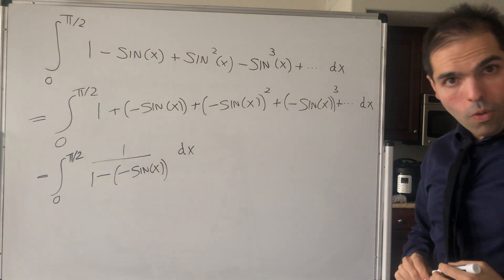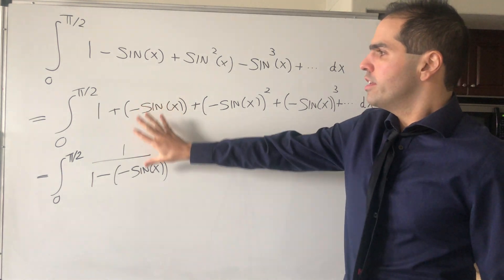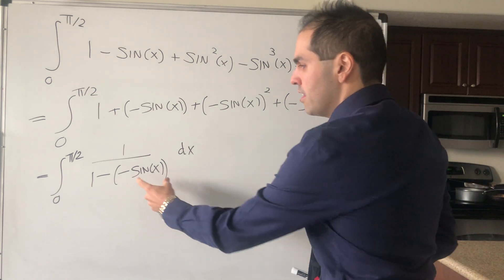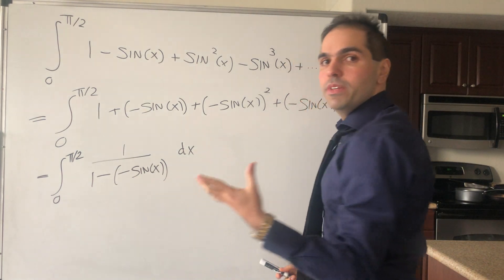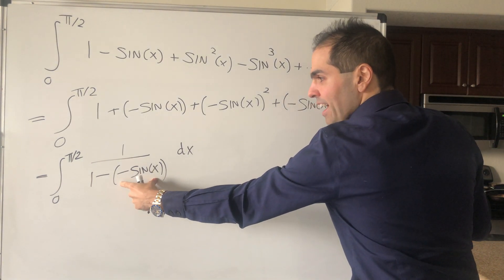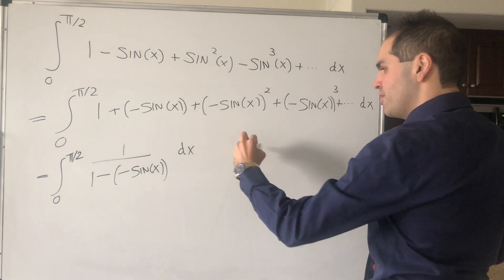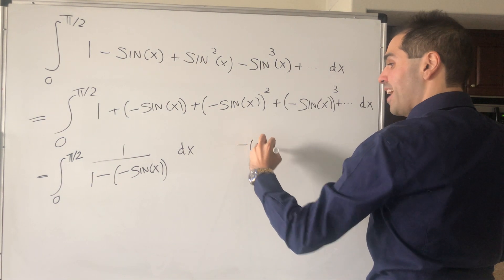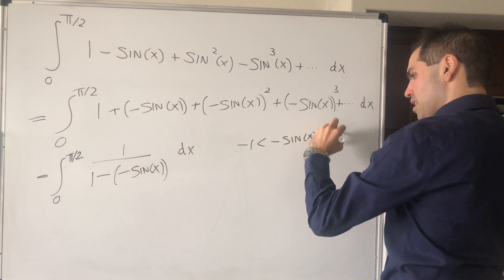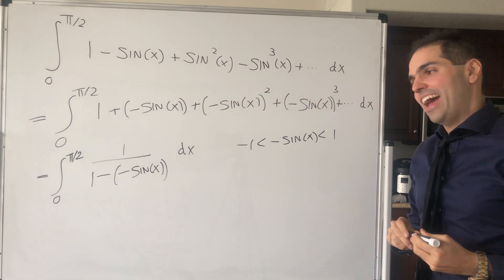Now, one little but yet important detail. Remember, the geometric series is just valid when the stuff inside is between minus 1 and 1. But luckily, this minus sin of x under interval 0 to pi over 2 is precisely between minus 1 and 1. So in fact, this wishful expansion is actually valid.